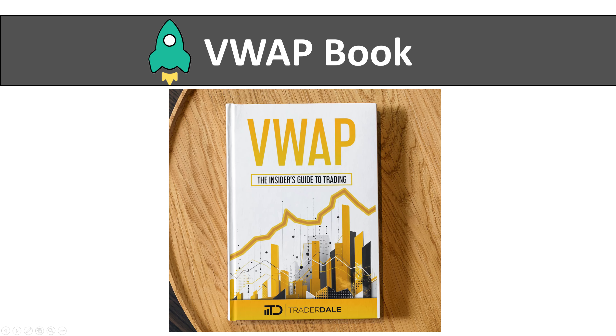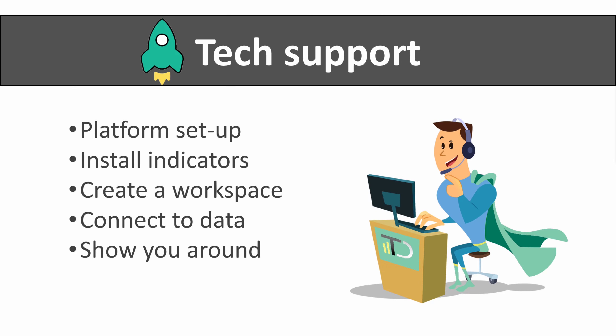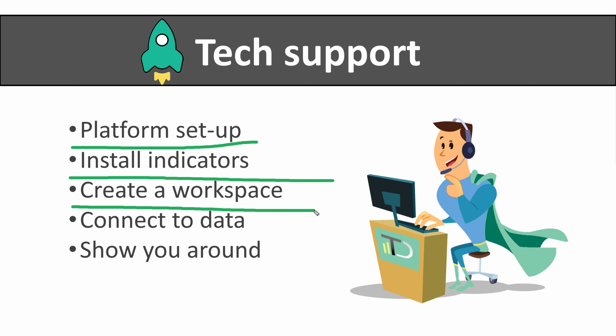Another thing you are going to get is a VWAP book — it is around 120 pages long and covers all VWAP trading essentials. Apart from all this, you are also going to get free tech support, which will do platform setup, install indicators, create workspace, connect you to data, and show you around the trading platform. This way you can focus on the course and your trading right away without bothering with the technical stuff and setting everything up yourself.